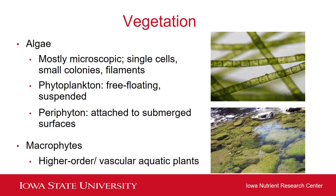There are different types of vegetation that you can see in a wetland. You might see algae, which is mostly microscopic — either single cells, small colonies, or filamentous. You may see phytoplankton, which are free-floating suspended algae in the water column. Or you might see periphyton, which is algae attached to submerged surfaces, either rocks or even the stems of plants. Then you have macrophytes, which are higher-order vascular aquatic plants, and that's what I'm going to be focusing on for my talk today.